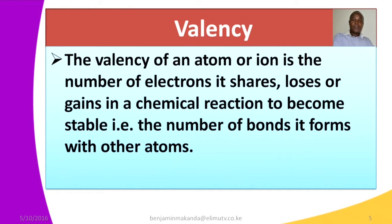Sodium loses one electron to become stable, so its valence and bond number is one. Magnesium, with configuration 2:8:2, loses two electrons, so its valence is two. Sulfur has configuration 2:8:6 — it is easier to gain two electrons than to lose six, because losing six requires much more energy. Therefore the valence of sulfur is two and its bond number is also two.